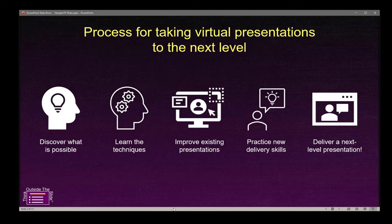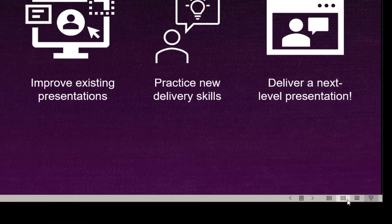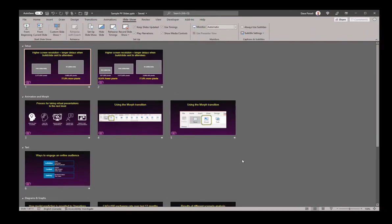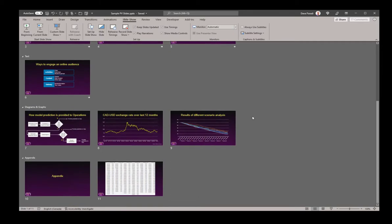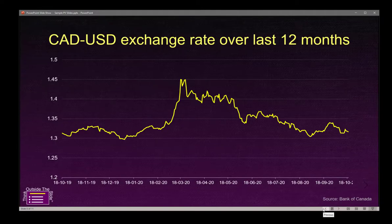Another way to jump between slides is to switch between views using the buttons in the lower bar of the PowerPoint window. If you're in Reading View and want to jump to another slide, click on the Slide Sorter view — it shows all your slides as thumbnails, organized in sections. Select the slide you want, then click the Reading View button in the lower bar to jump directly into Reading View on that slide.